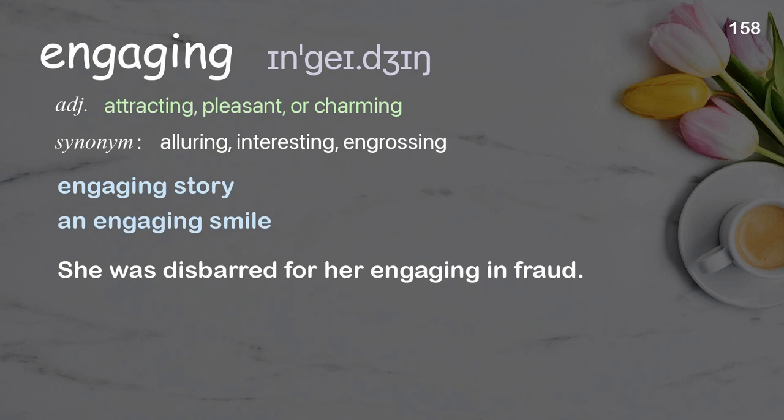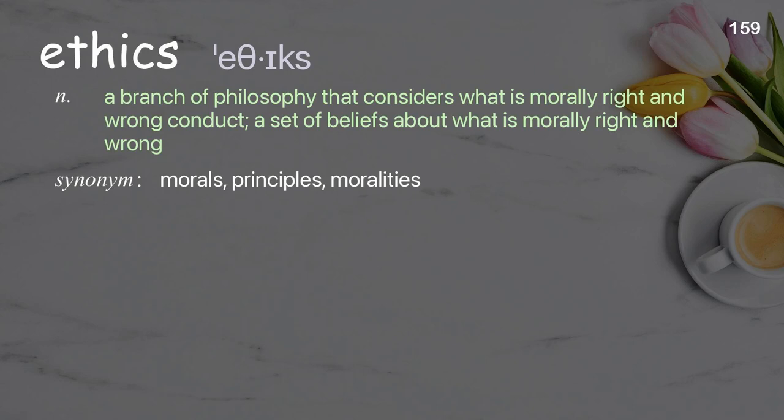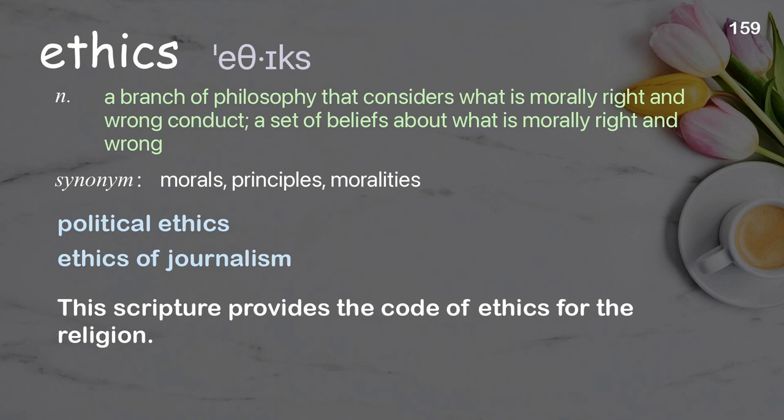Ethics: a branch of philosophy that considers what is morally right and wrong conduct; a set of beliefs about what is morally right and wrong. Examples: political ethics, ethics of journalism. This scripture provides the code of ethics for the religion.